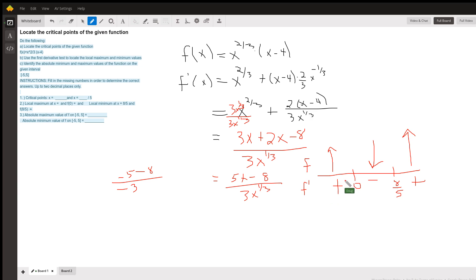So that tells us we have a relative maximum. We went from increasing to decreasing. So this is a relative maximum. Here we have a relative minimum. And that's what they're asking you to do here. Critical point zero and eight-fifths, they even gave you the denominator.